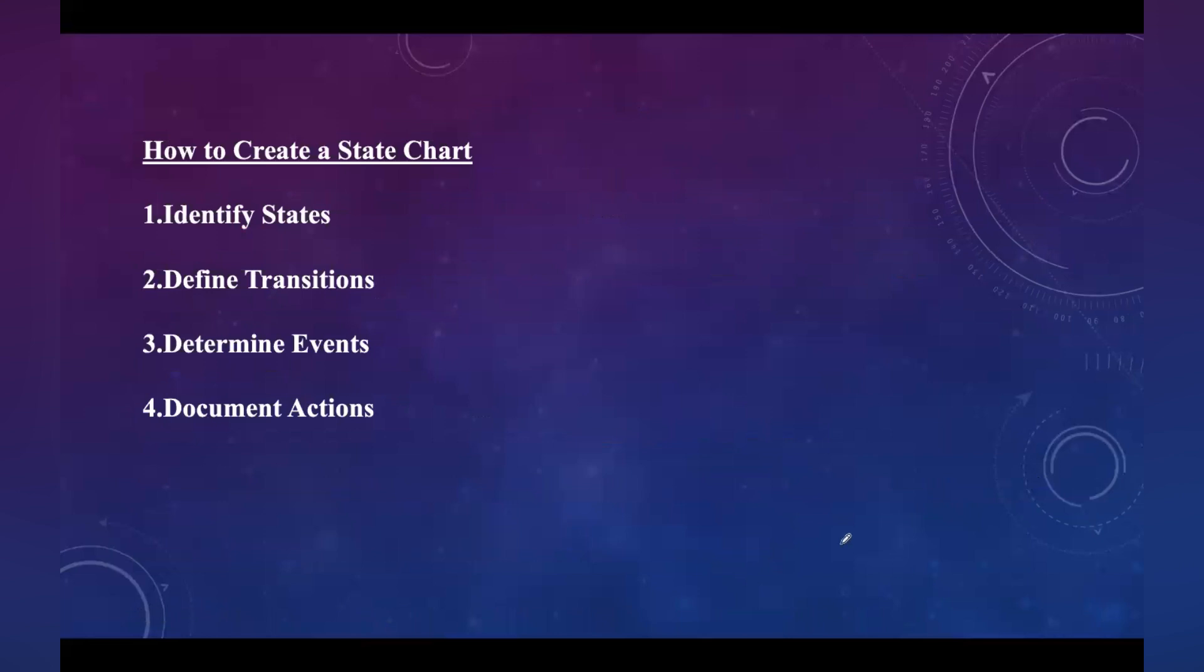First thing is you need to identify the states, so determine all possible states of the system. Then define the transitions, so specify how the system transitions from one state to another based on the events. Next, determine events—identify the events that trigger transitions. Then finally, document the actions, note any actions that occur during transitions in a state.